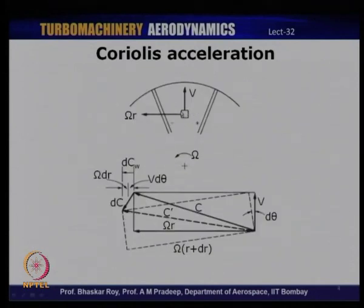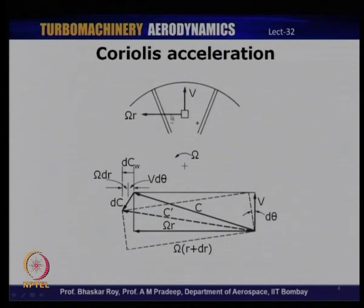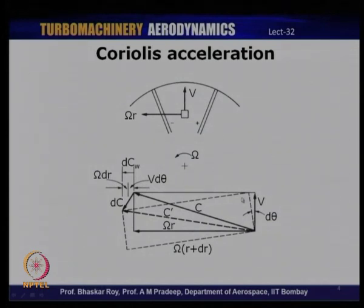The fluid element has a relative velocity v and blade speed or rotational velocity ωr, where r is the radius at which the fluid element is currently located and ω is the rotational speed. If you look at the velocity triangles for this fluid element, the absolute velocity c is given by the resultant of v and ωr. The basic velocity triangle is shown by the solid lines — you can see v, ωr, and their resultant, the absolute velocity c.